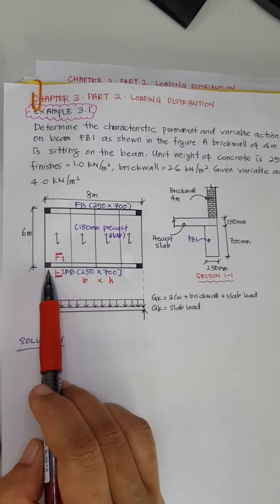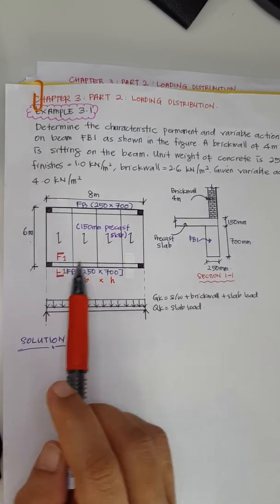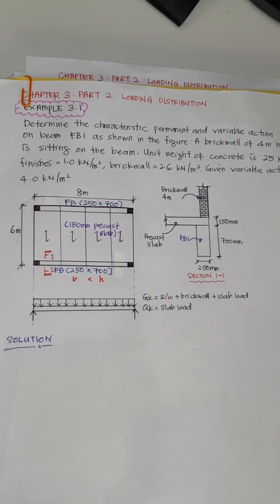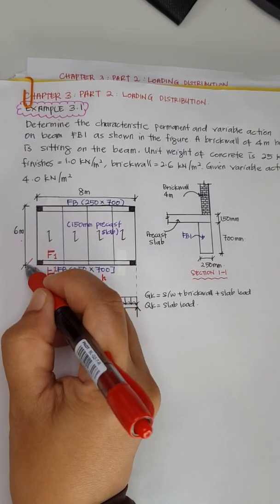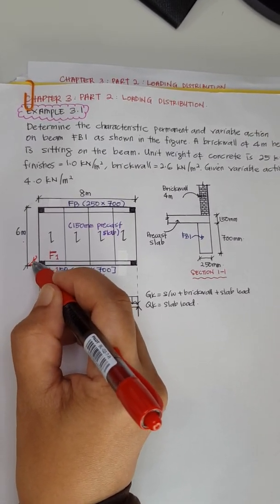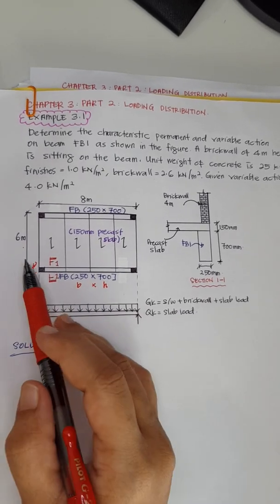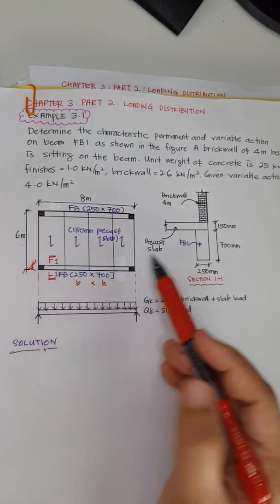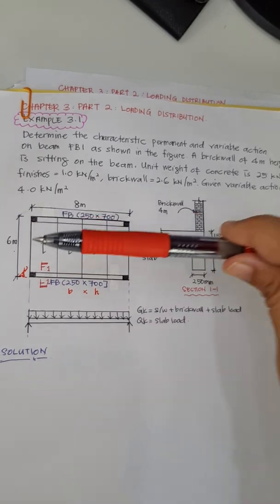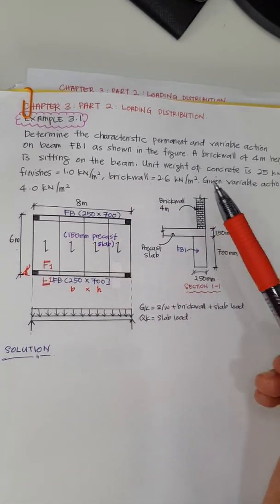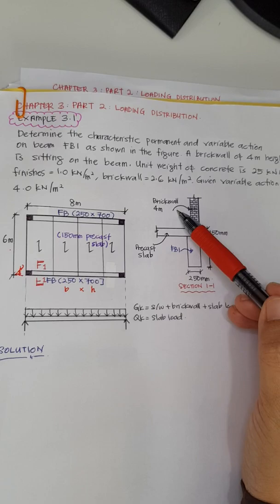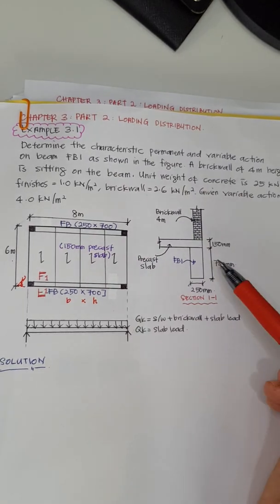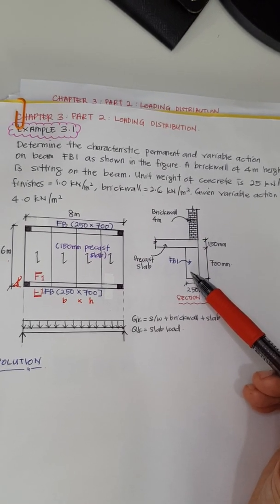This is the cross-section, section 1-1. Here you can see the column and the beam. Along this beam there is a brick wall of 4 meters height. This is the pre-cast slab, and this is beam FB1.